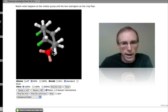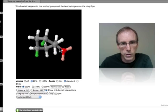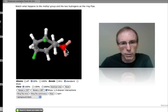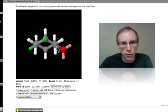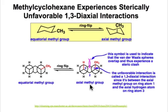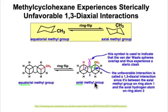We can estimate the energy difference between the axial and equatorial conformations by recognizing that only in the case of the axial conformation do we have a Gauche interaction between the two bonds that I've highlighted there.